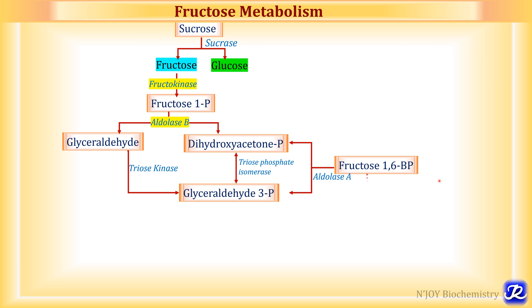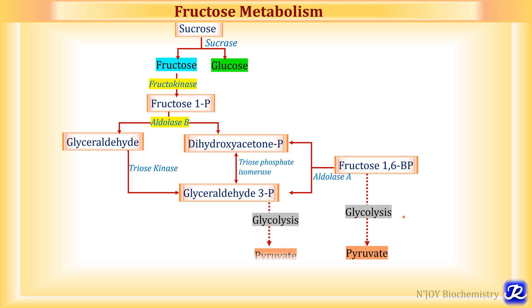If the body is in the well-fed state, then fructose 1,6-bisphosphate is channeled towards formation of pyruvate through glycolysis. Glyceraldehyde 3-phosphate can also be channeled through glycolysis to form pyruvate. This is one of the fates of fructose metabolism in the well-fed condition — formation of pyruvate from fructose.